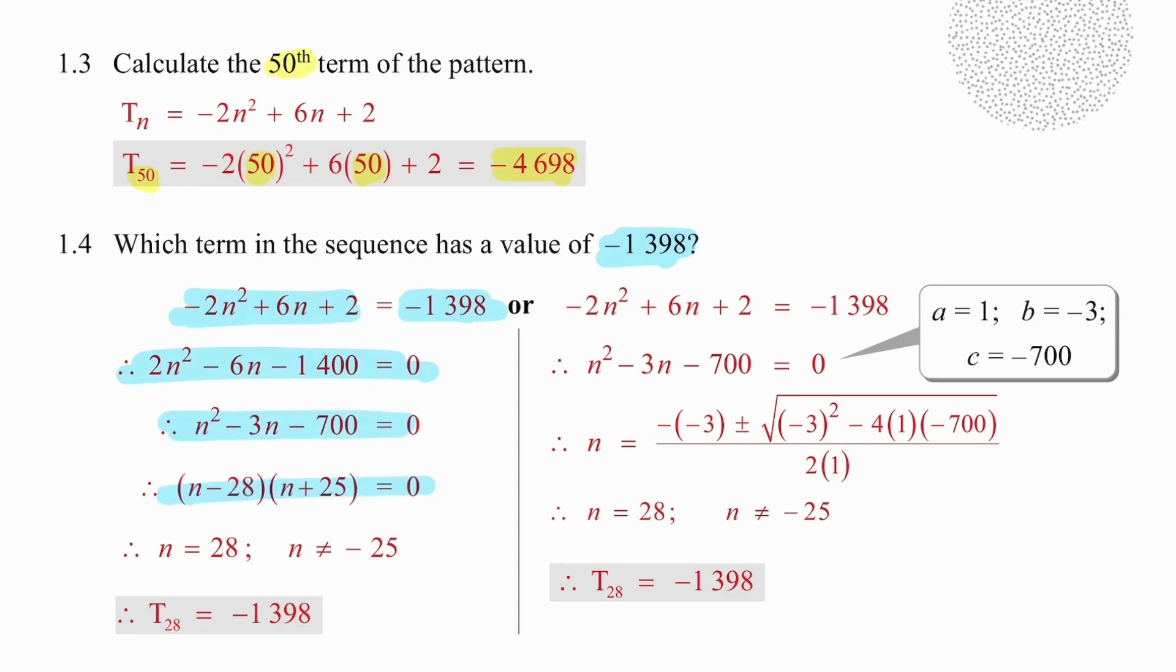We will then either factorize, or we will make use of the fact that we can see that the value of a is 1, the value of b is minus 3, the value of c is minus 700. Careful substitution into the quadratic formula will give us the exact same results of n equal to 28 or n equal to minus 25.